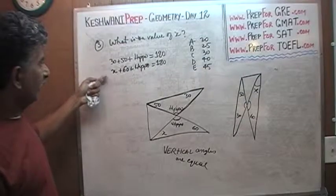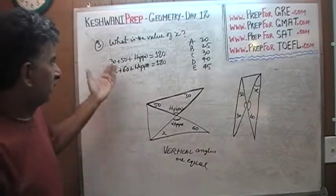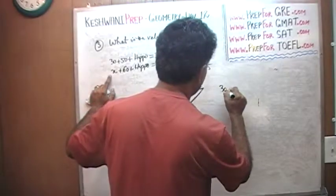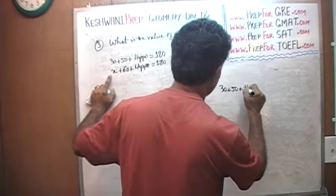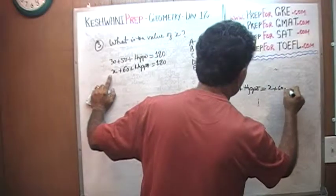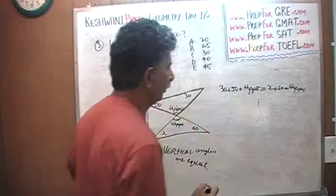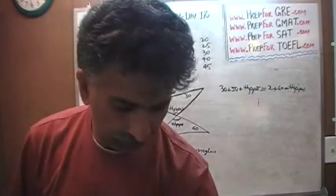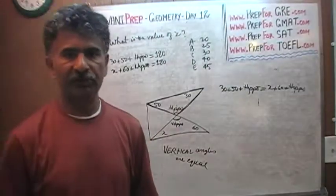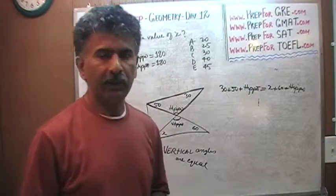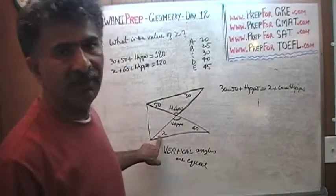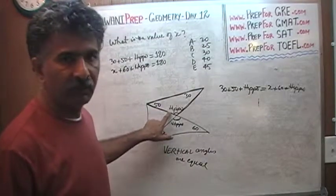So if this equals 180 and this equals 180 that means the two quantities are equal to each other. That means 30 plus 50 plus this hippo guy must equal x plus 60 plus hippo. Where did this hippo come from? I am just being silly obviously. I am just trying to make a point here that sometimes students have a tendency of freaking out if they see a variable with a strange name.